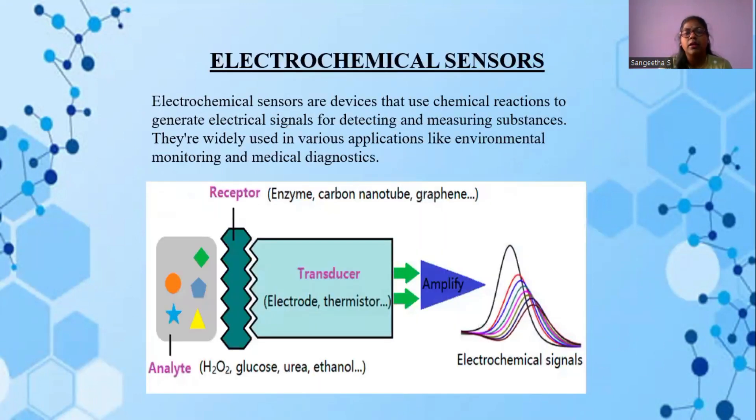Next, let's discuss about electrochemical sensors. Electrochemical sensors are devices that use a chemical reaction to generate electrical signal for detecting and measuring substance. They are widely used in various applications like environmental monitoring and medical diagnostics.